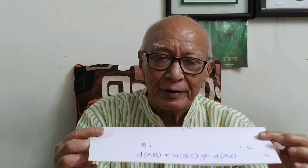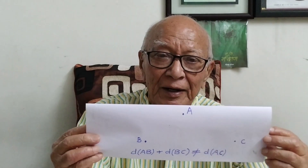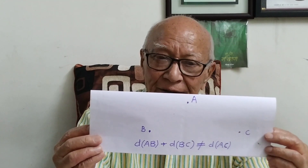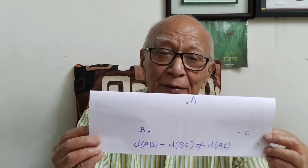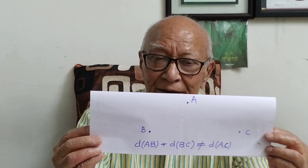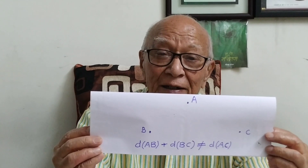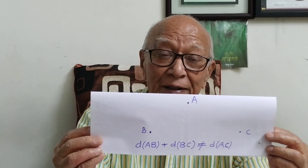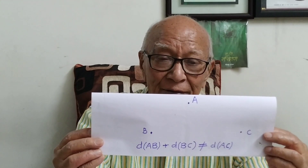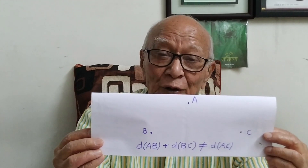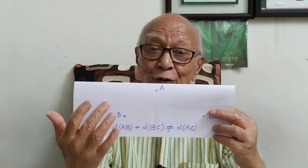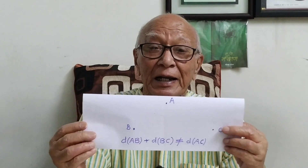Now observe these points. Again, I have shown three points here — point A, point B and point C. Again, measure the distance between A and B, B and C, and A and C. And see whether distance AB plus distance BC equals distance AC — never, they can't be equal. And if I join these three points, a triangle is formed.